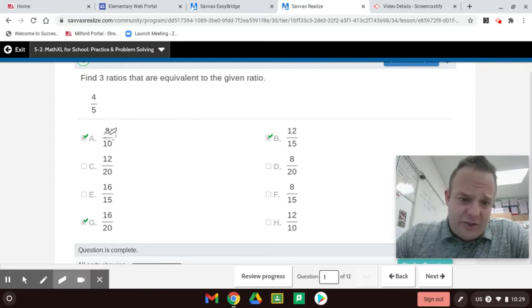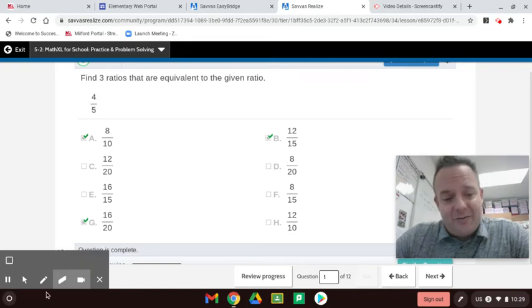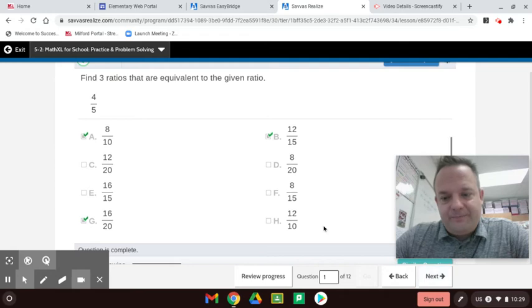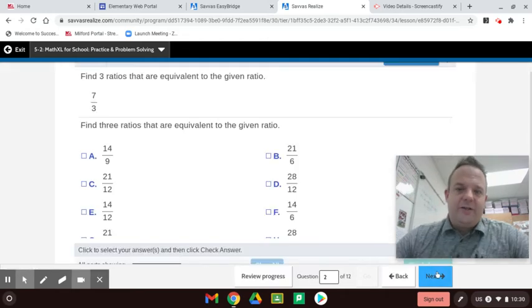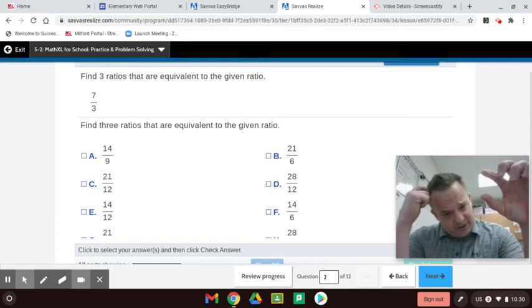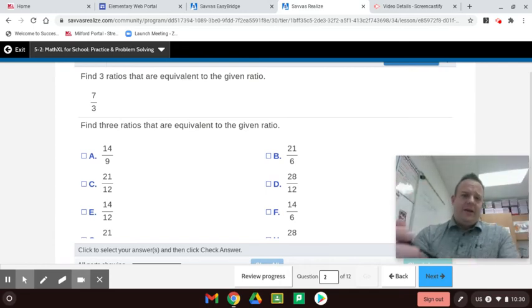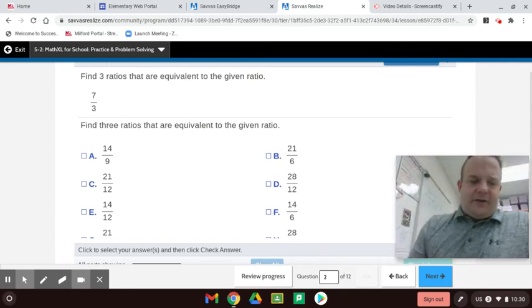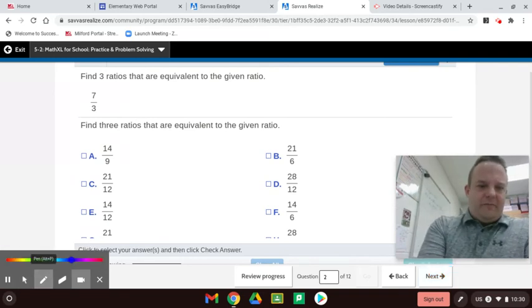Another strategy you can do is reduce all of these to lowest terms. And whichever ones are equal to the lowest terms. I recommend if this is not in lowest terms to reduce it to lowest terms. Another solution is to find the decimal for each one of them. Another way you can do it is to line up each fraction and cross multiply. That's another way. All right. So I'm going to stick with the ratio table method.